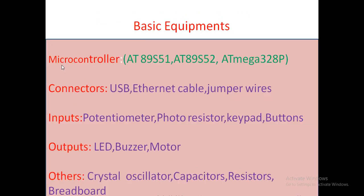To summarize the basic components: the microcontroller is the brain of any embedded system — it gives intelligence to the entire system. Other components include USB connector, programmer to transfer code from laptop to device, Ethernet cable, jumper wires, potentiometer, photoresistor, keypad, buttons, sensors, outputs like LED, buzzer, and motor. Also, a crystal oscillator to provide the clock frequency for the microcontroller, capacitor — the combination of capacitor and crystal oscillator makes the clock circuit for the 8051 — and a resistor to limit the current flow.